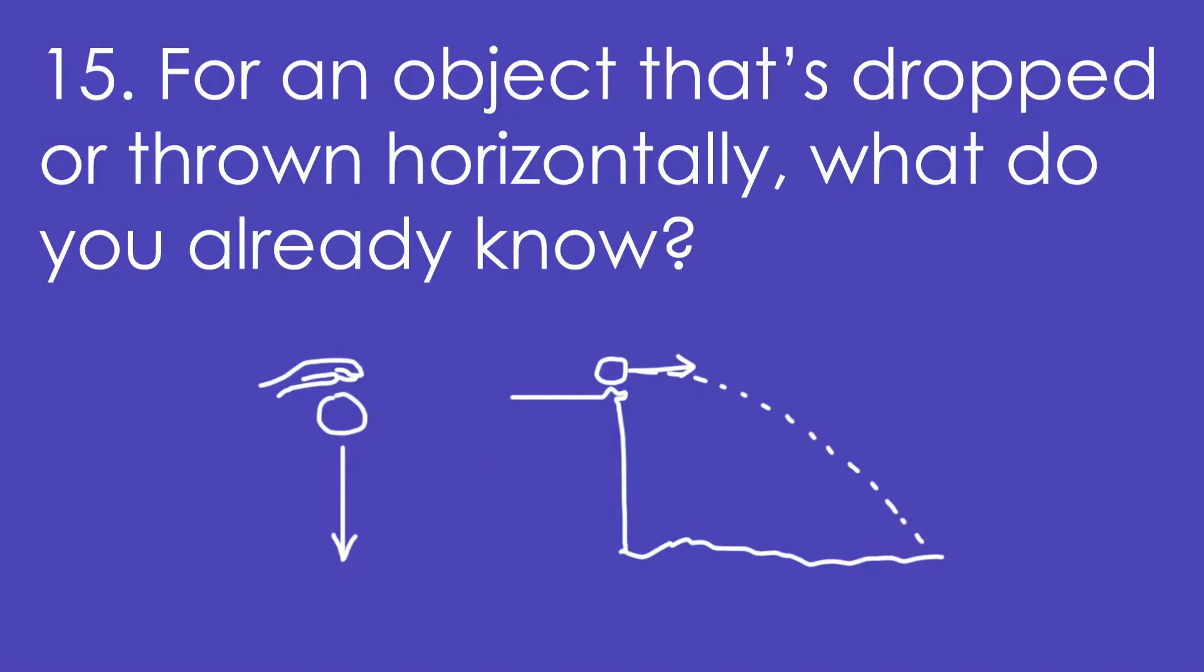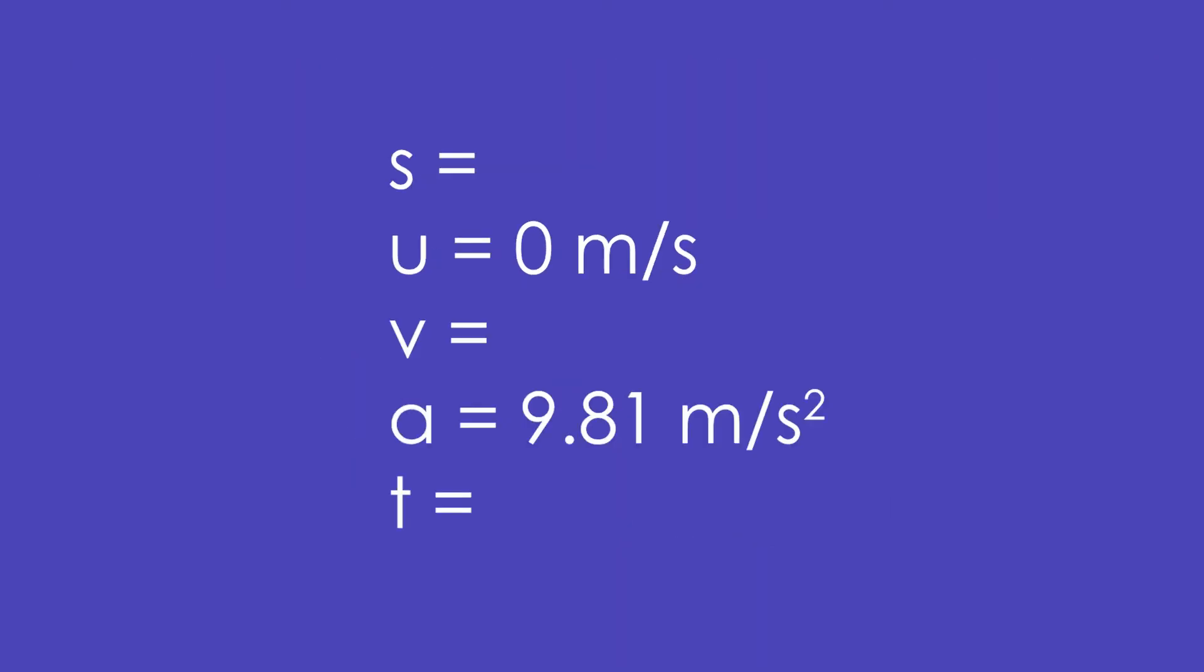15. For an object that's dropped or thrown horizontally, what do you already know SUVAT-wise? You know that initial speed is zero meters per second, and acceleration is 9.81, acceleration due to gravity. Even if it's moving sideways, U vertically is still zero.